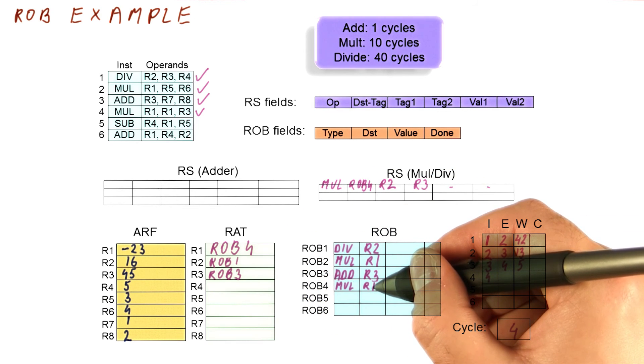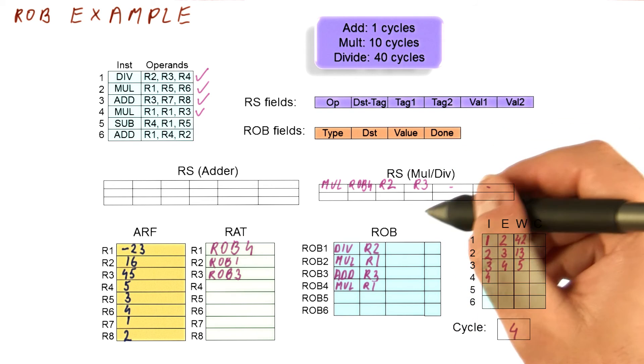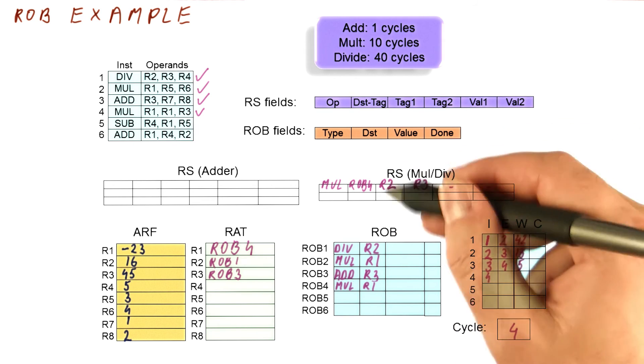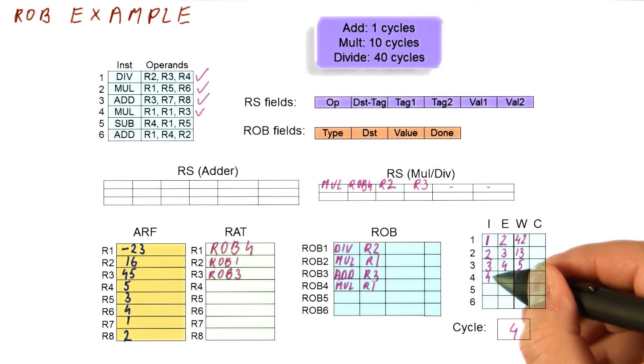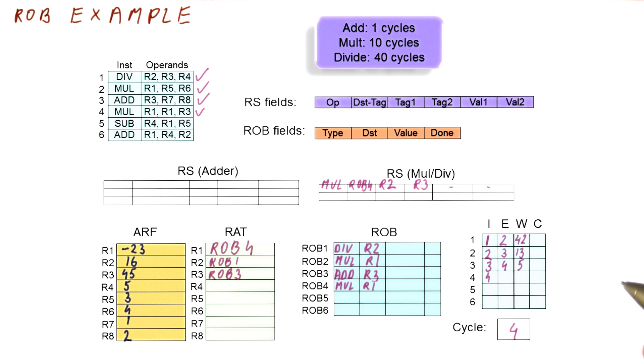So now r1 begins to point at rob4 because that's the latest r1 that we are going to produce. And this instruction will not be able to execute yet. It's actually going to execute once both of these operands are ready. So this basically finishes cycle four, and we are ready to see what happens in cycle five.